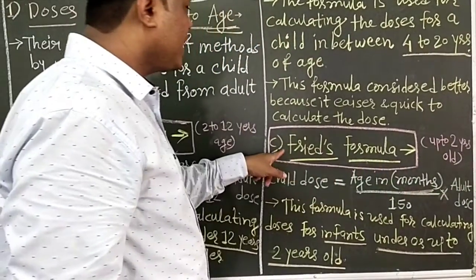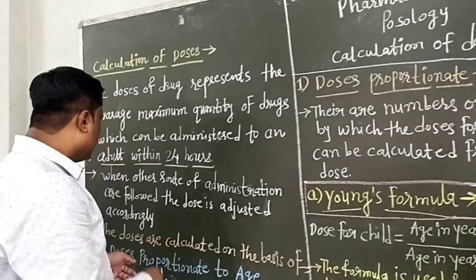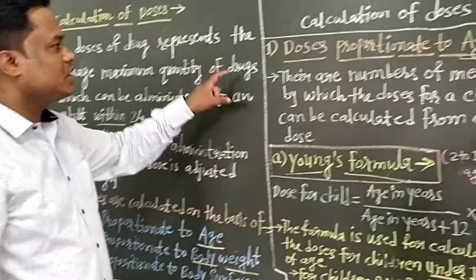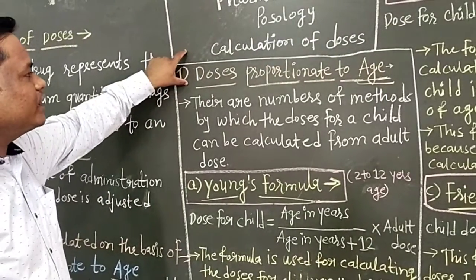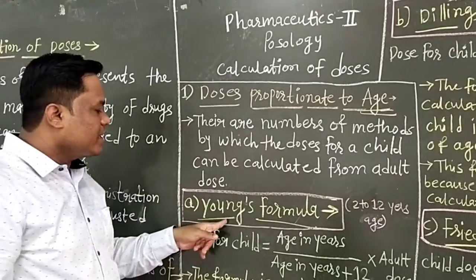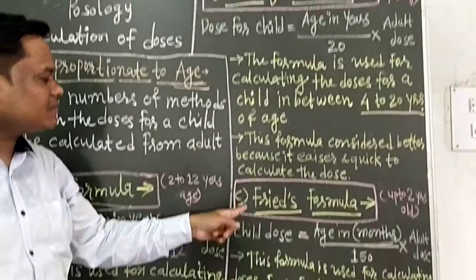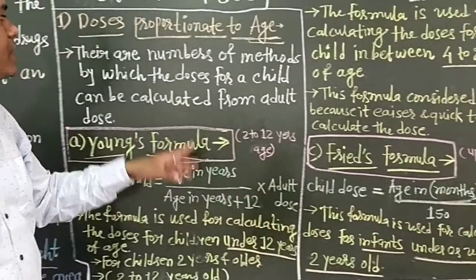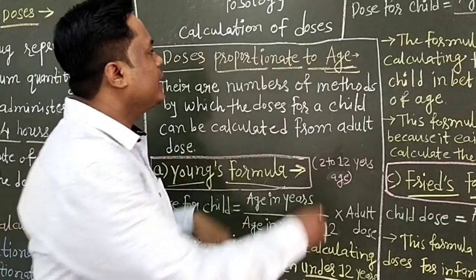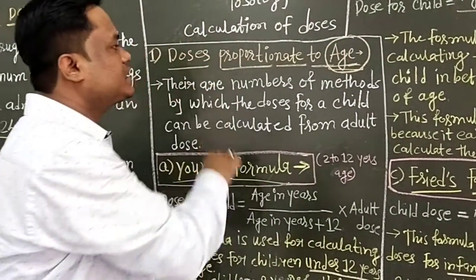To summarize, for doses proportionate to age group, three formulas are used: first is Young's formula, second is Dilling's formula, and third is Fried's formula. These three formulas are used to calculate doses according to the child's age group.